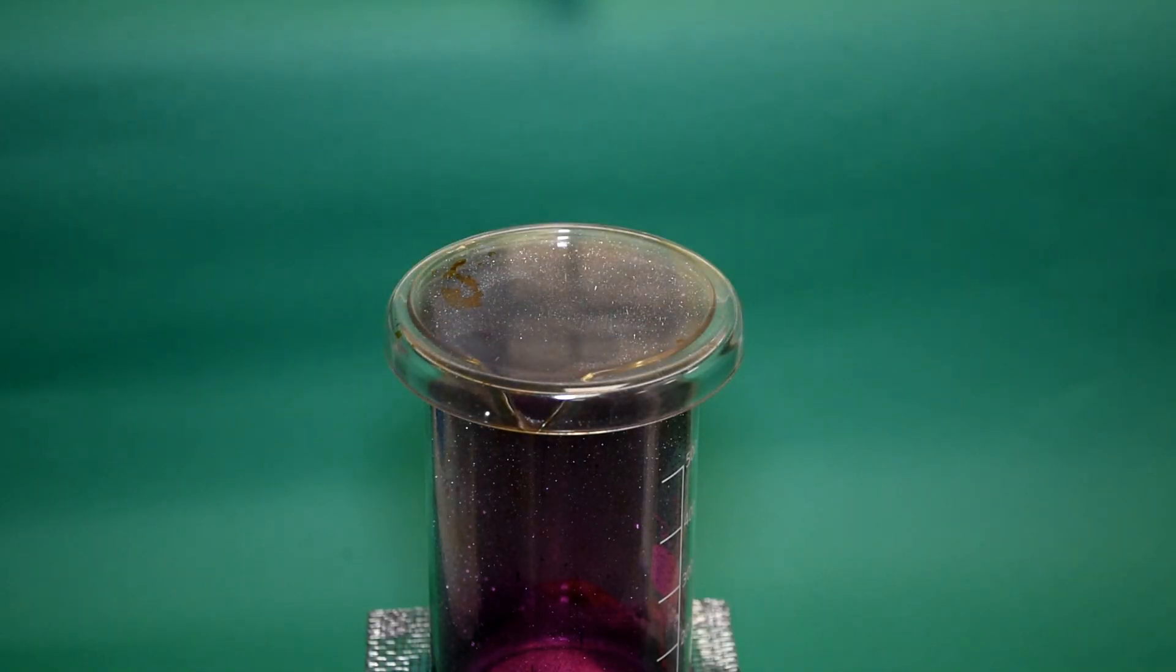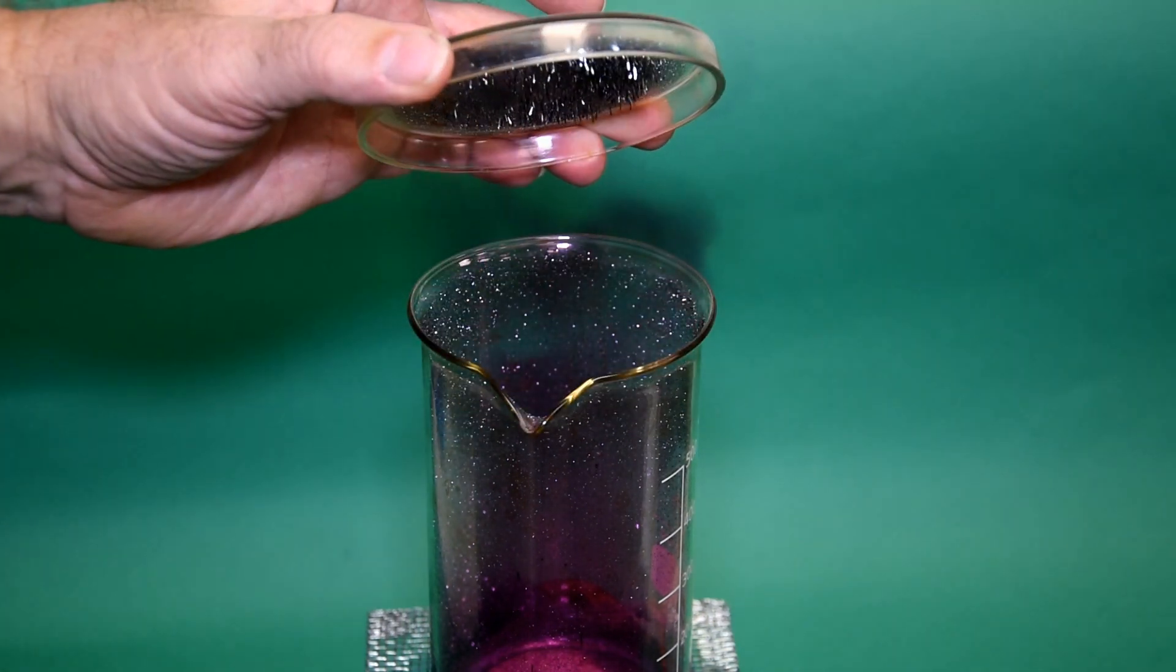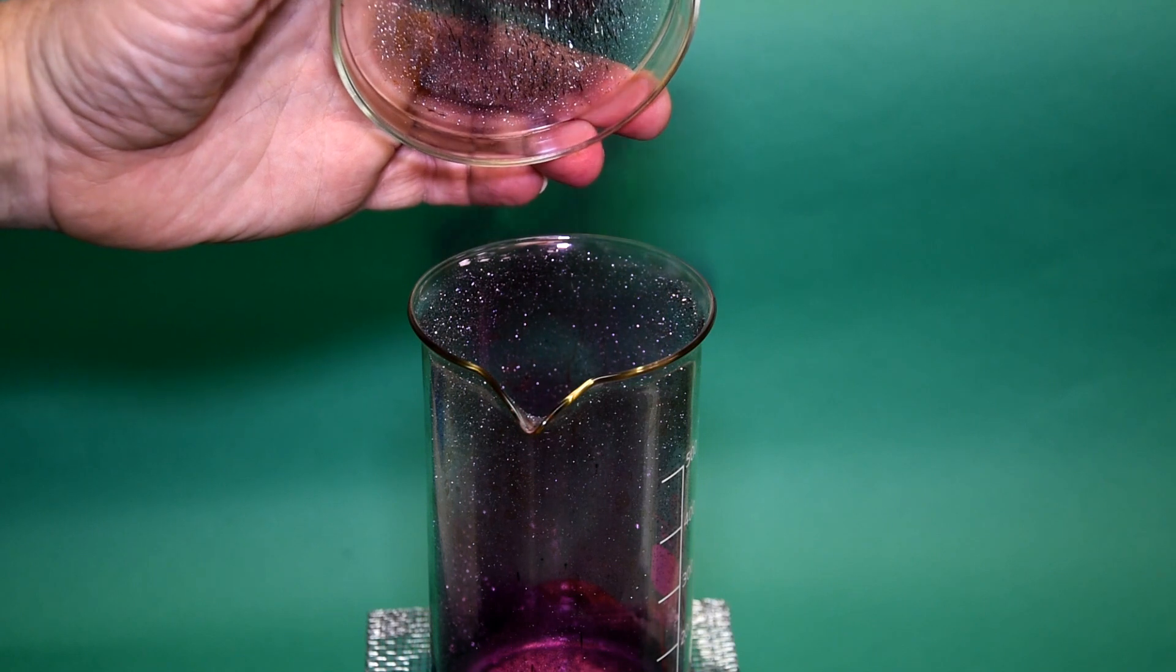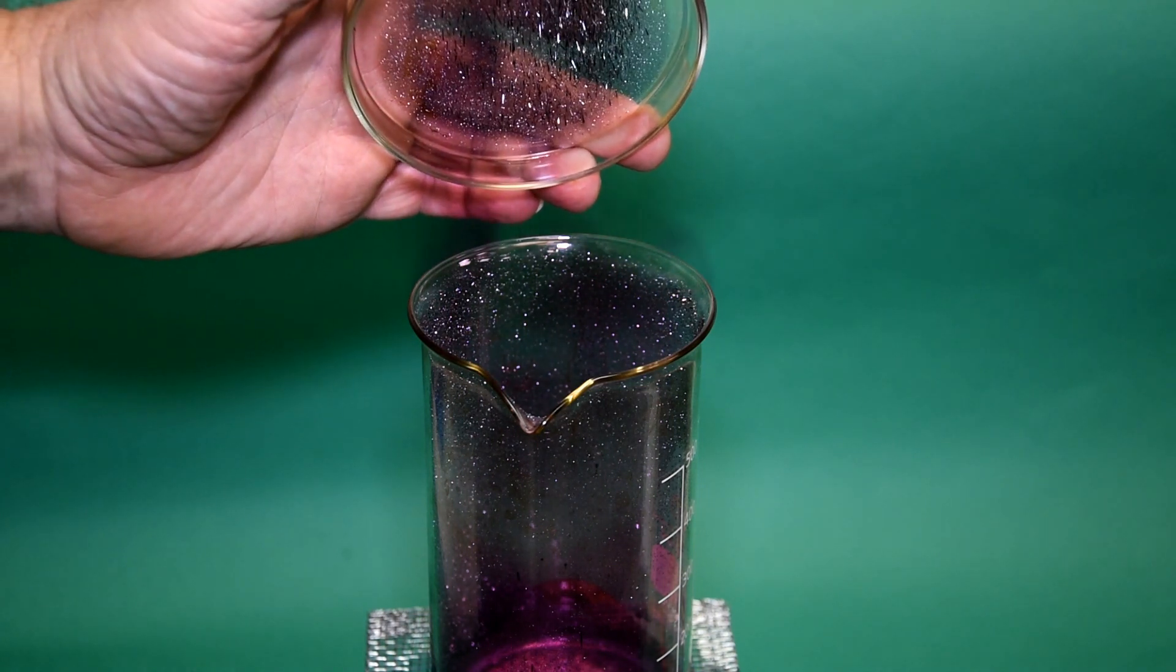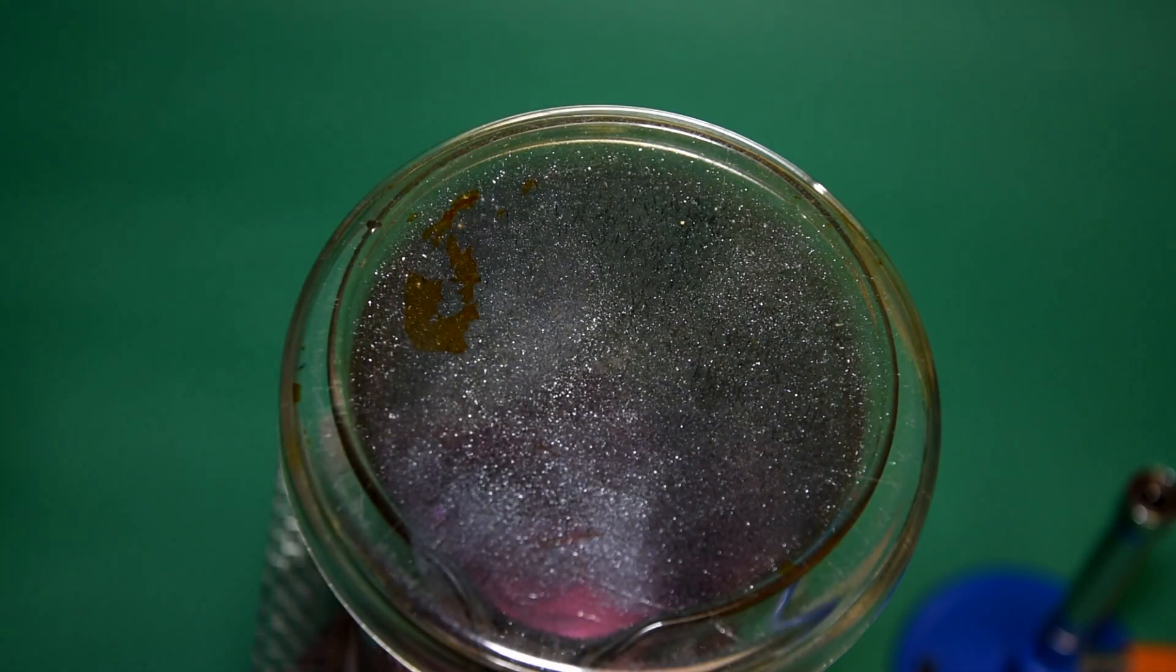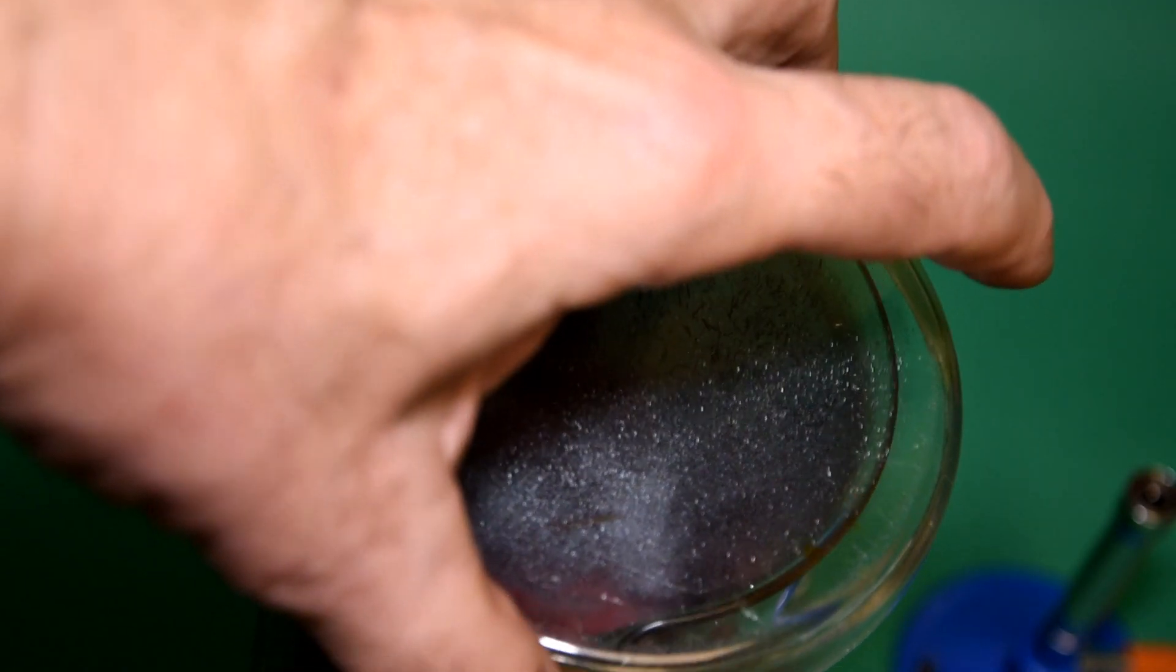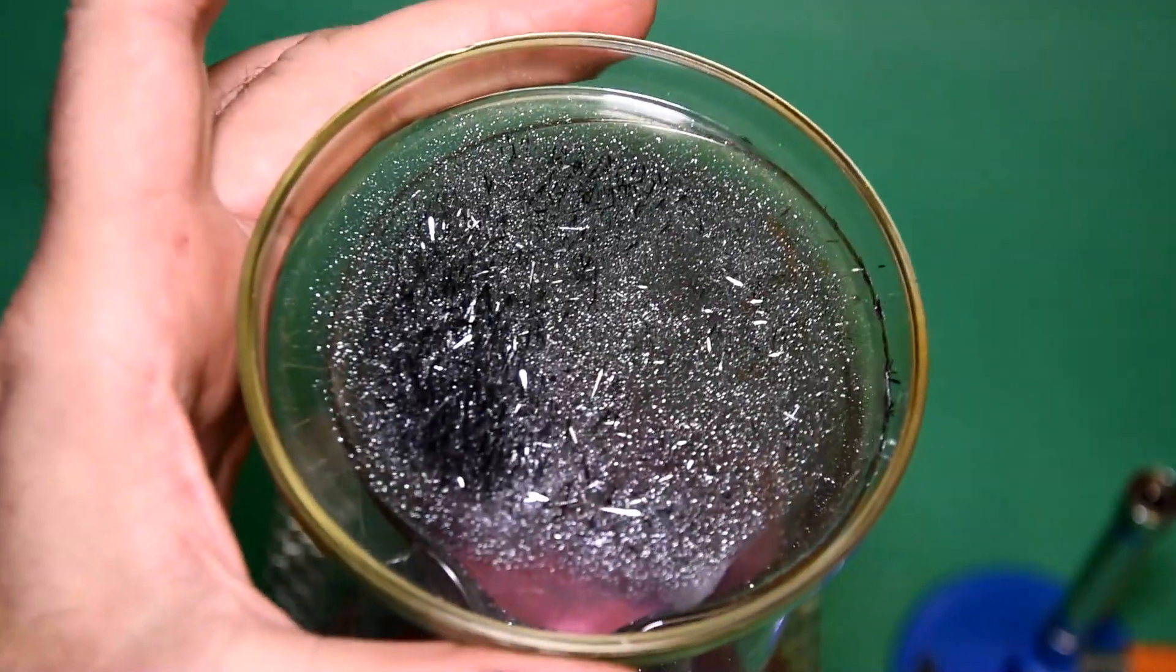A little bit later, and doing the same thing, you can see now that solid crystals of iodine have started to sublime on the lid. And this is later still where all the iodine vapor has sublimed on the surface of the beaker and on the lid.